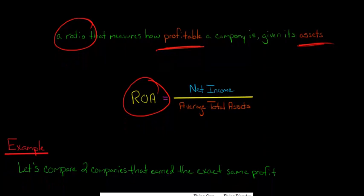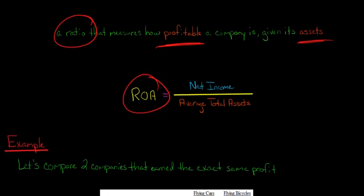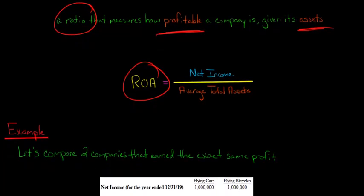Let's say that we have two companies that have the exact same net income. So they're equally profitable, and we want to compare them. Let's say we have a company called Flying Cars and a company called Flying Bicycles. Each of them, for the year ended December 31st, 2019, they have net income of a million dollars. This is the exact same profit. Both companies made a million dollars of net income.